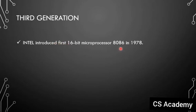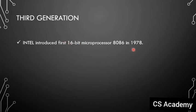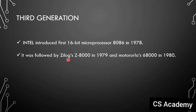The third generation: Intel introduced the first 16-bit microprocessor, the 8086, in 1978. This was an upgrade — the microprocessor moved to 16-bit configuration. It was followed by Zilog Z8000 in 1979 and Motorola's 68000 in the 1980s.